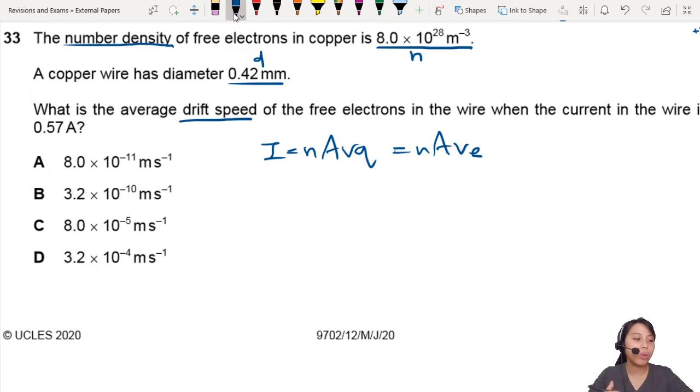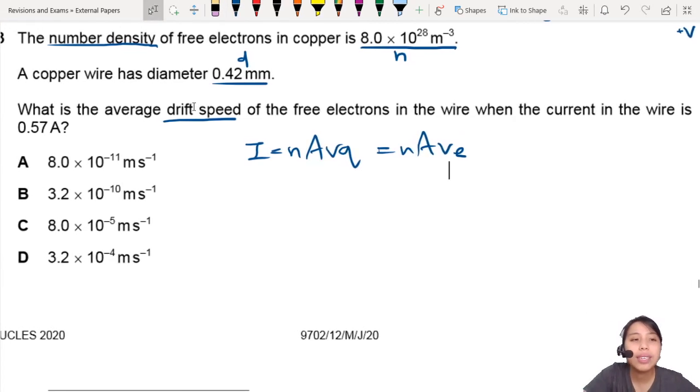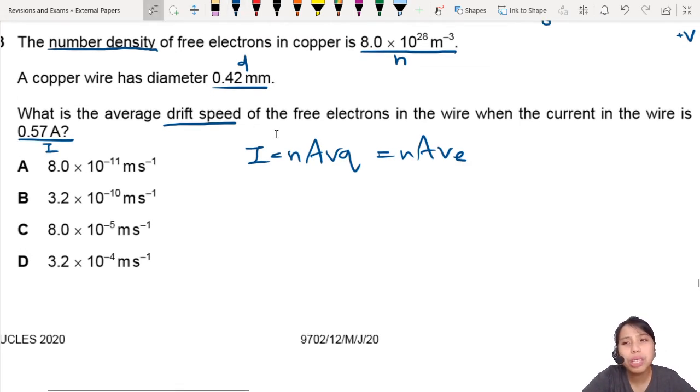Make sure you know what the equation is. This is probably the drift velocity kind of question. So what is the average drift speed of the free electrons in the wire when the current in the wire is 0.57 amps? We pretty much have all the information given to us. That's very nice of them.